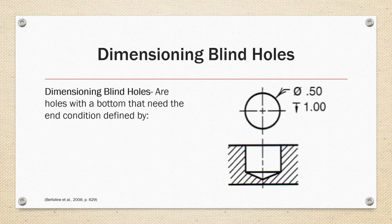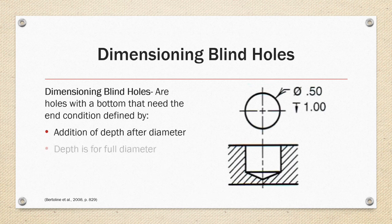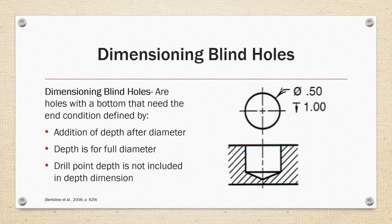Blind holes have a bottom hole end condition that needs to be defined by a dimension by adding a depth symbol after the diameter that defines the depth of the full diameter, and that does not include the drill point.